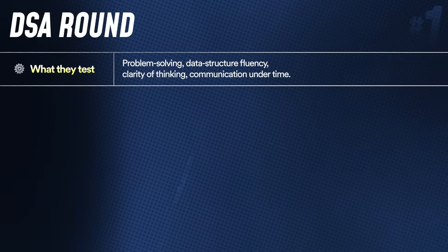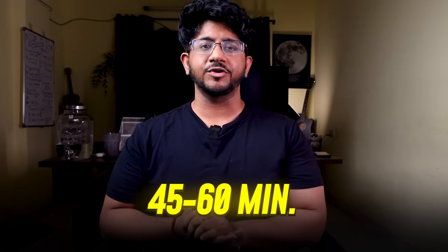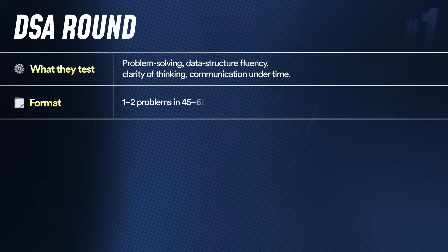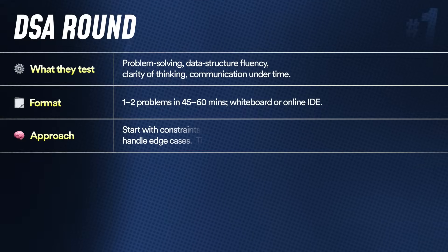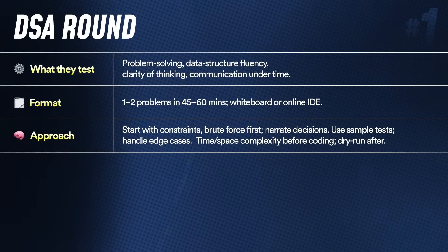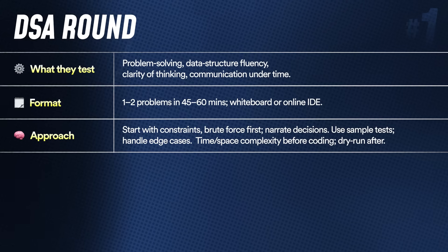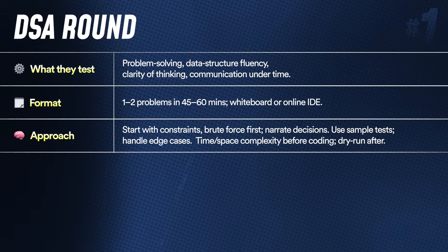Number one is the DSA round. DSA rounds try to test you on problem solving, data structure knowledge, clarity of thinking, and communication under time pressure. Generally, you have 45 to 60 minutes, you're given a problem, and you're asked one or two questions — sometimes three depending on difficulty. You start with a brute force solution and try to optimize. Ask for constraints, discuss time complexity and space complexity before jumping onto the solution, and make sure the interviewer is happy with your approach.